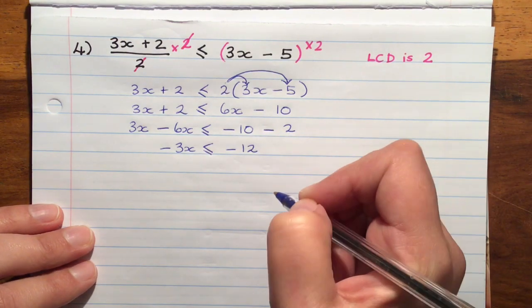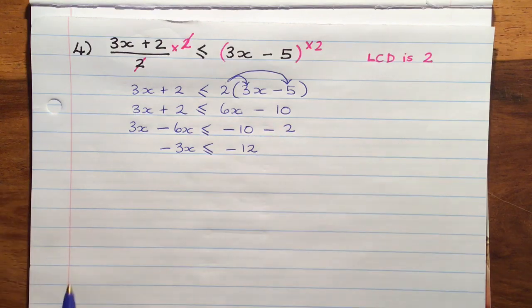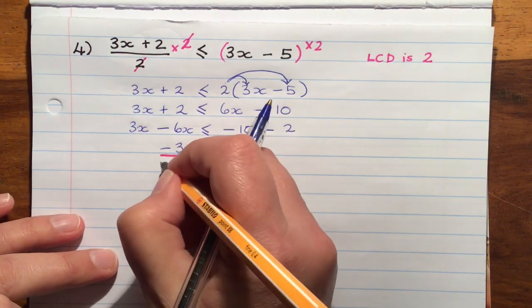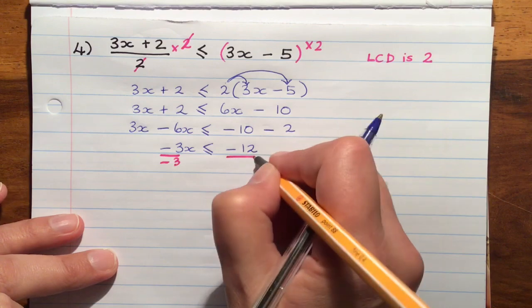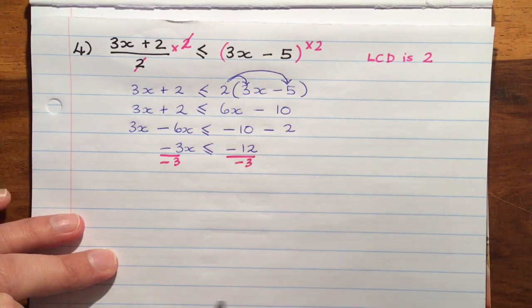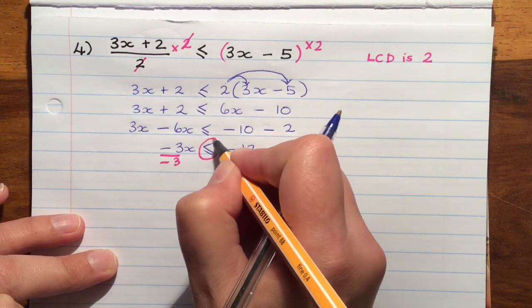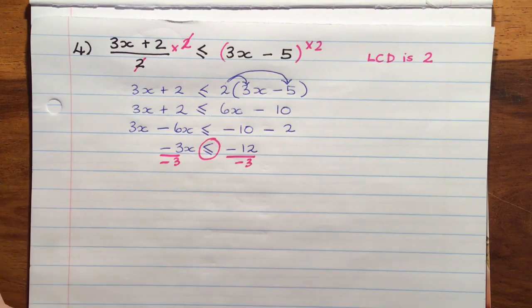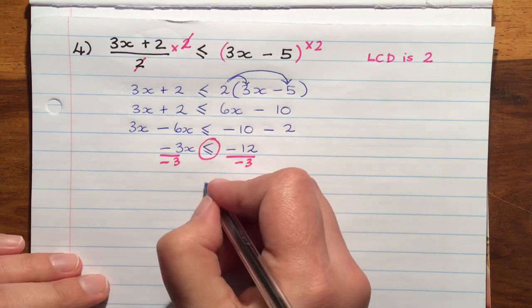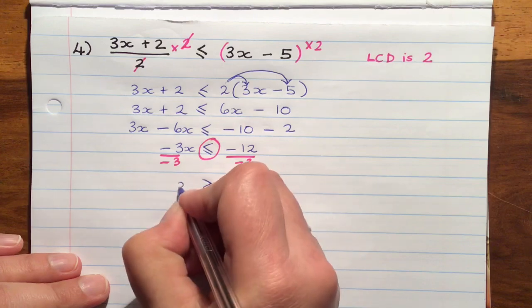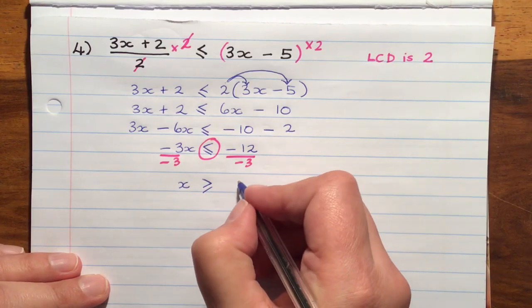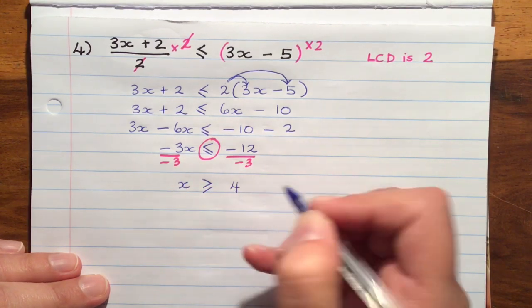Now, the last step is to divide both sides by negative 3. And now we've got to be careful. We've been dividing by a negative number. So on the next step, we've got to swap the direction of our inequality sign. So we're going to have x is greater than or equal to positive 4.